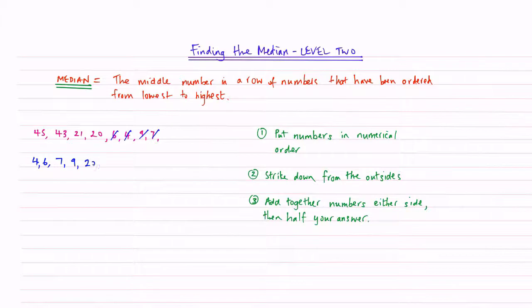Then we've got a 20, a 21. And the next one is a 43. And then we've got a 45. So those are my numbers in numerical order.